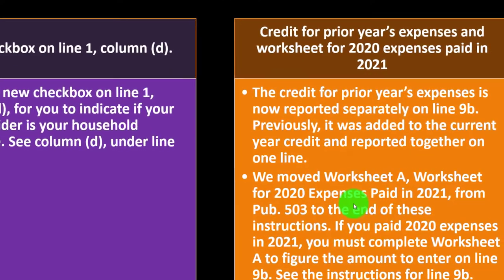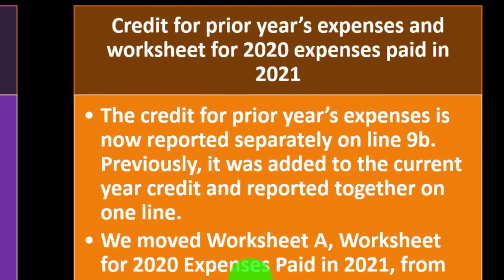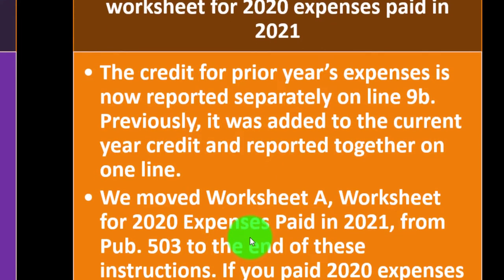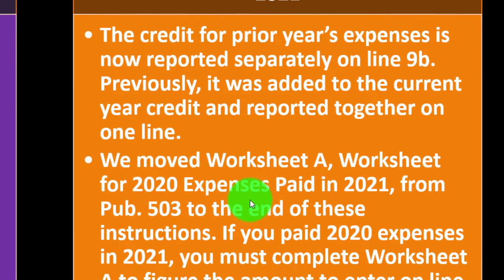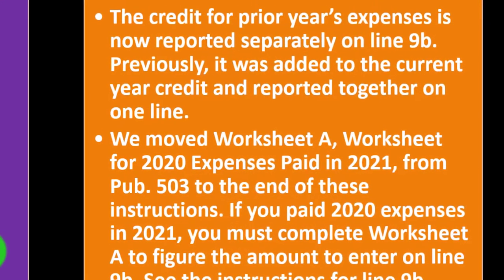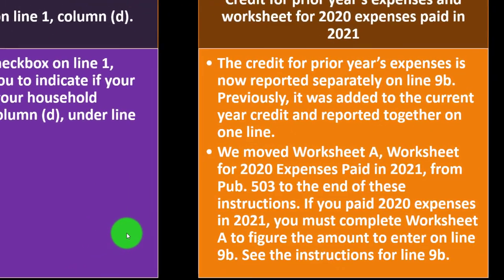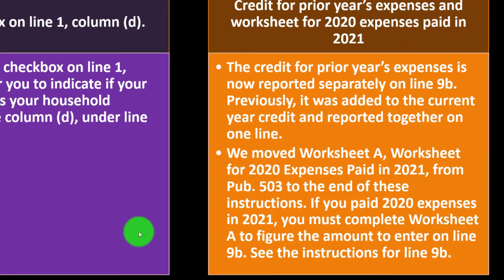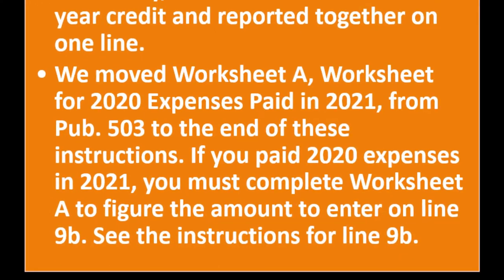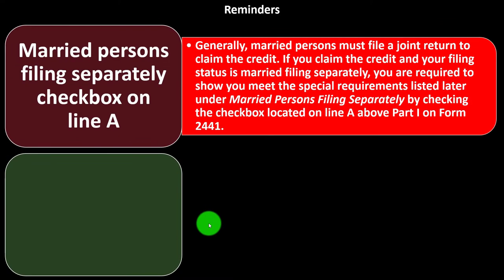Credit for prior year expenses — the worksheet for 2020 expenses paid in 2021: the credit for prior year expenses is now reported separately on line 9B. Previously it was added to the current year credit and reported together on one line. Worksheet A for 2020 expenses paid in 2021 has been moved from Publication 503 to the end of these instructions. If you paid 2020 expenses in 2021, you must complete Worksheet A to figure the amount to enter on line 9B.